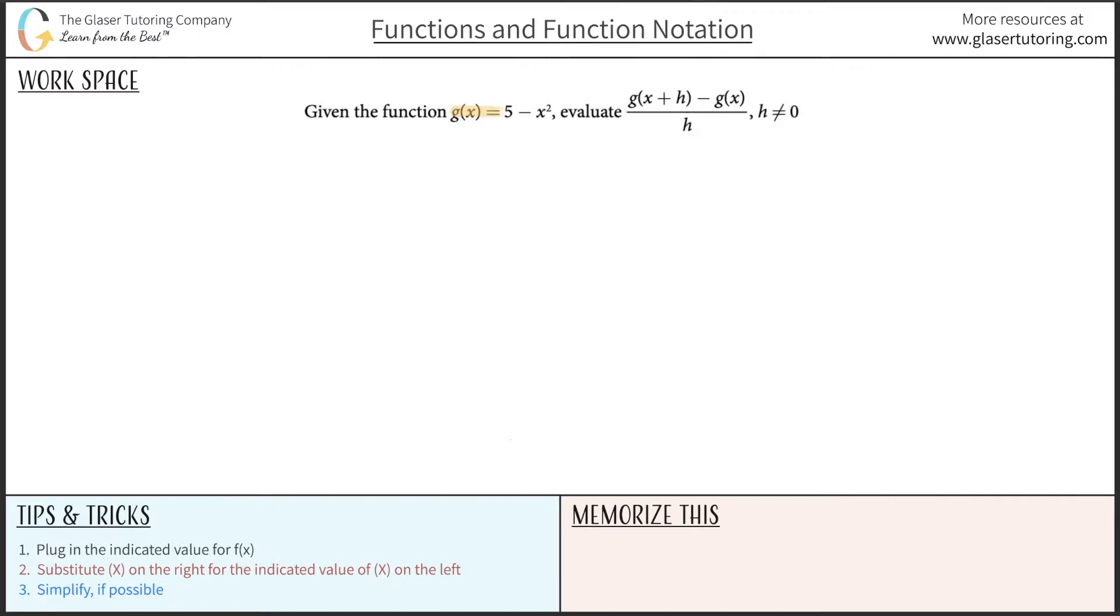Given the function g of x equals 5 minus x squared, evaluate g of x plus h minus g of x all divided by h, where h cannot equal 0.